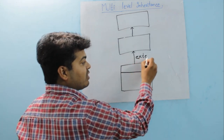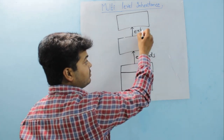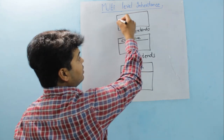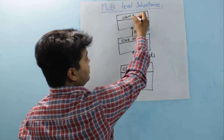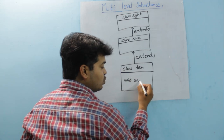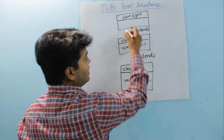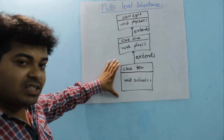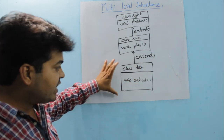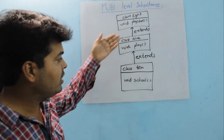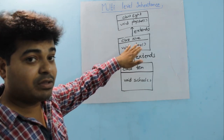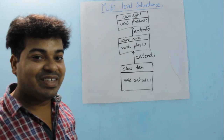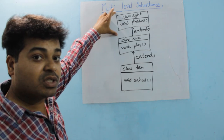When inheriting properties, you use the keyword extends. Here I have class 10, class 9, and class 8. Class 8 has a non-static method called 'school', class 9 has a non-static method called 'play', and class 10 has a non-static method called 'play school'. I'm using non-static methods because static methods cannot be inherited, as I mentioned in the single level inheritance video.